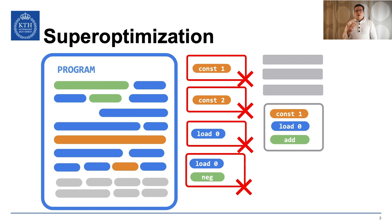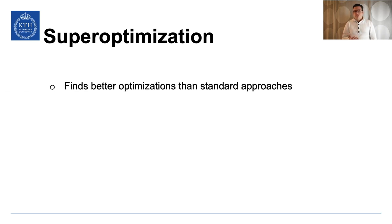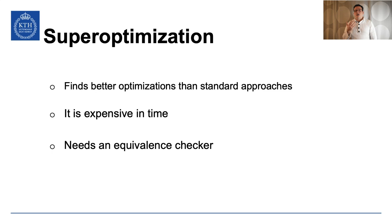The search continues until you find a program that is a perfect replacement for the given program. To be a perfect replacement, this new program needs to be functionally equivalent to the input program and needs to be smaller. Following this technique and this exhaustive exploration of all possible programs, a super-optimizer can outperform standard optimization techniques. However, it is very expensive in terms of time, and it also requires an equivalence checker. Usually this is guaranteed using symbolic evaluation on both programs.